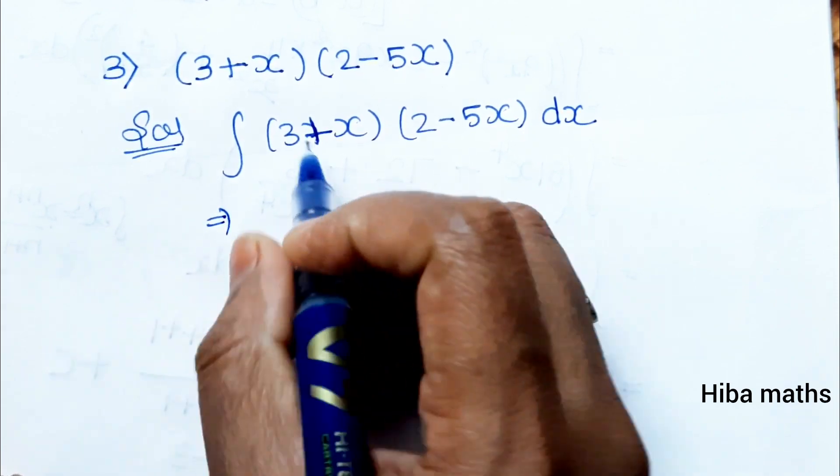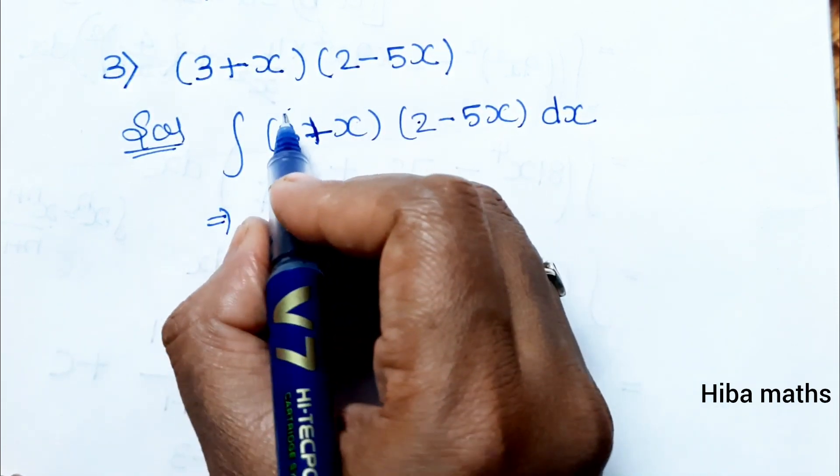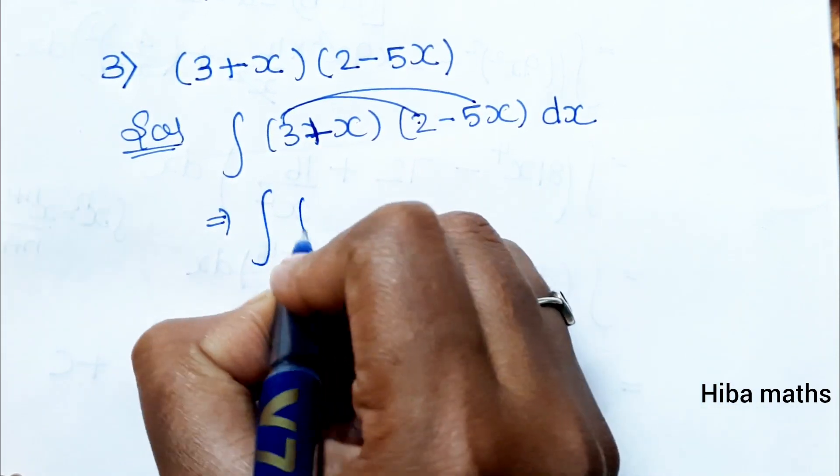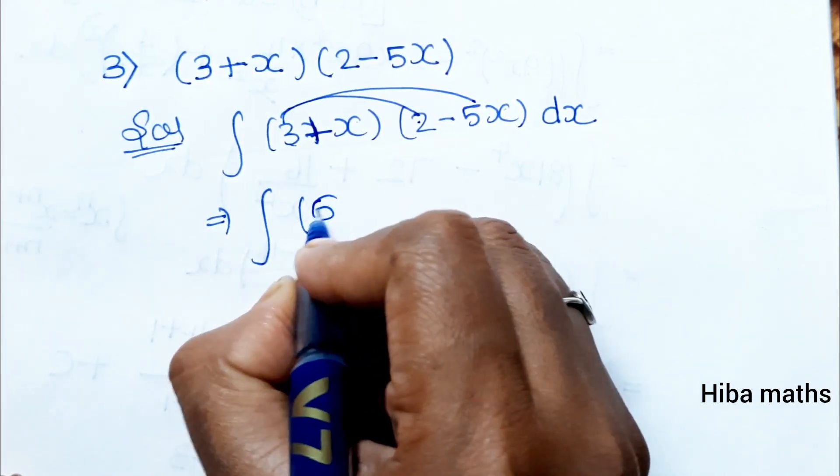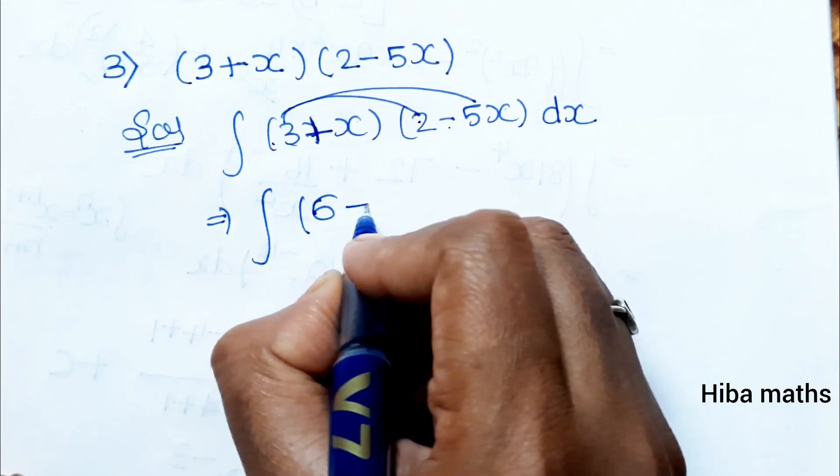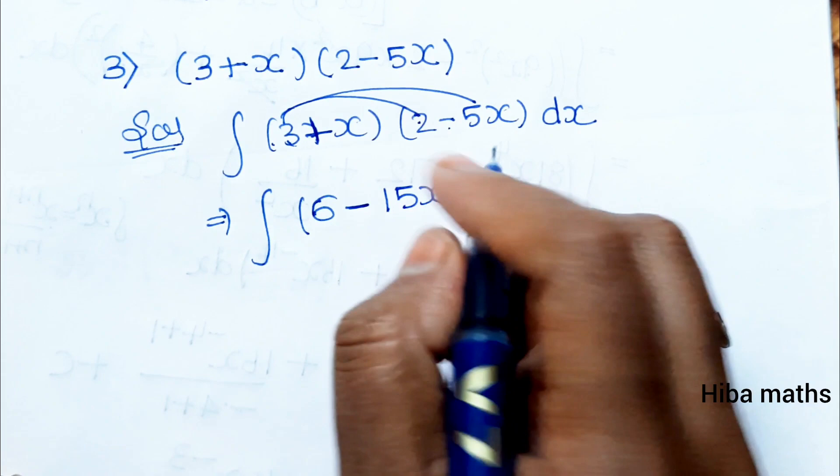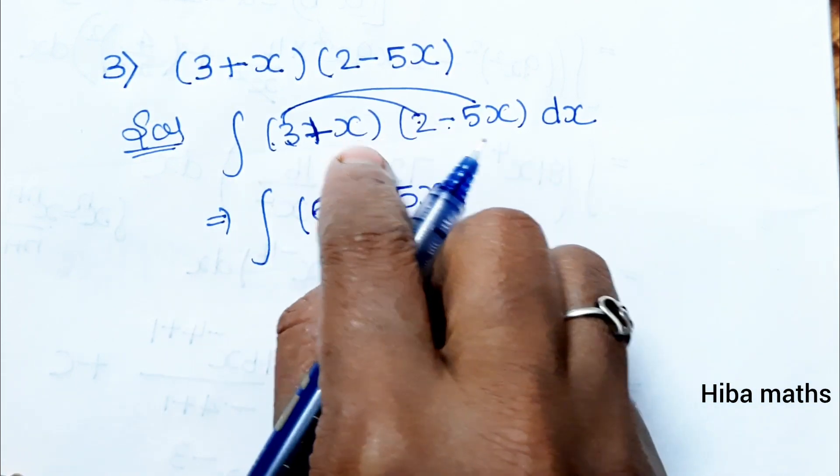We will solve this: 3 into 2, first 3 into 2, then 3 into 5x. 3 into 2 is 6, plus into minus is minus. 3 into 5 is 15, so -15x. We multiply 3 to all terms first.